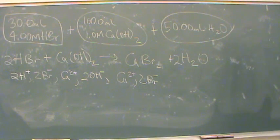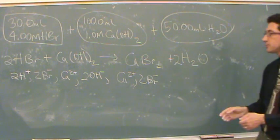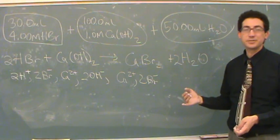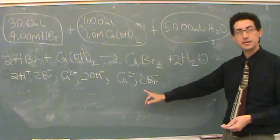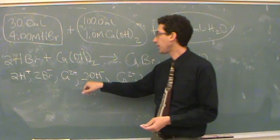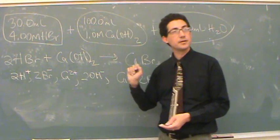So I think what your TA is asking you to do is find the concentration of all the spectator ions in solution. So that would be bromide, calcium two plus, and those.